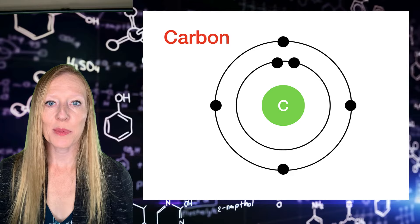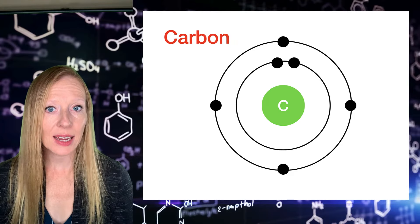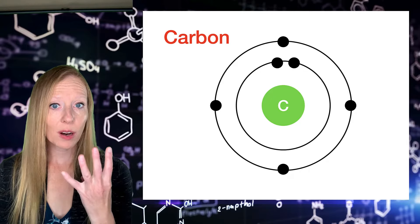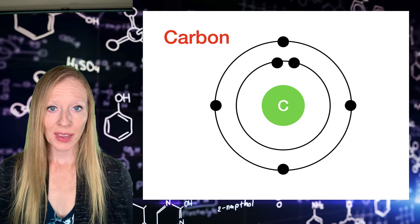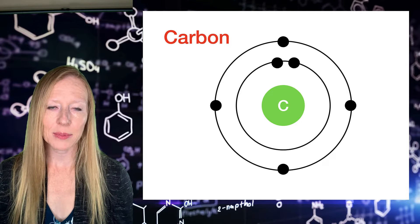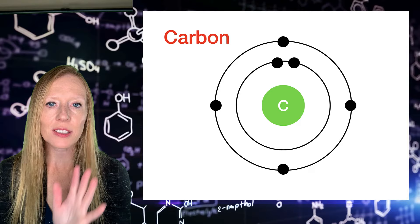Well, recall that carbon with its atomic number of six looks like this. Two electrons in the first electron shell, leaving four for the outer electron shell. This means, as you've learned, that it can form four covalent bonds with other atoms. And this makes it incredibly versatile.